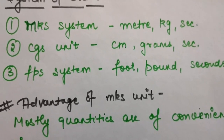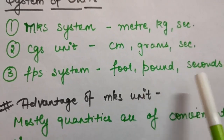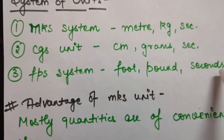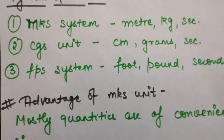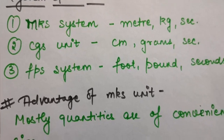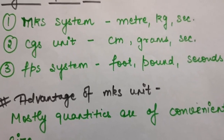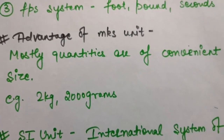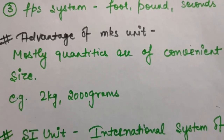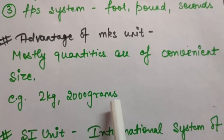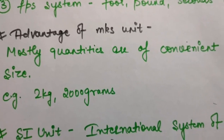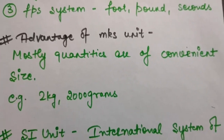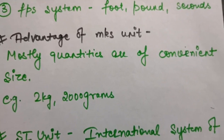Similarly there is another system called the FPS system, which is foot, pound, and seconds system. Length, mass, and time will remain in these units for the FPS system. Out of these three systems, mostly we use the MKS system — length in meters, mass in kilograms, and time in seconds. The advantage of the MKS system is that mostly quantities are of convenient size. For example, either 2 kilograms or 2000 grams — which is more convenient? Obviously 2 kilograms, because it is a smaller quantity. Therefore we prefer the MKS system.